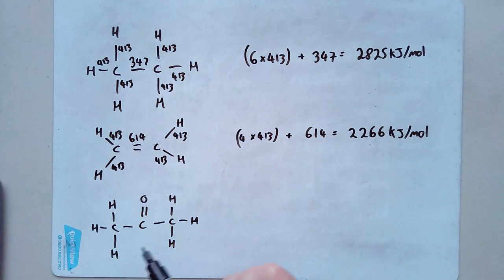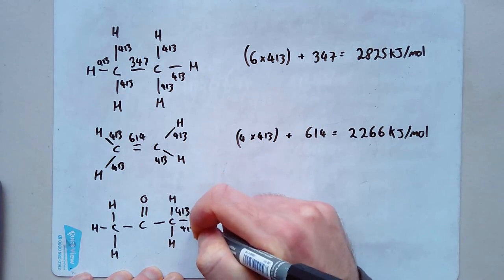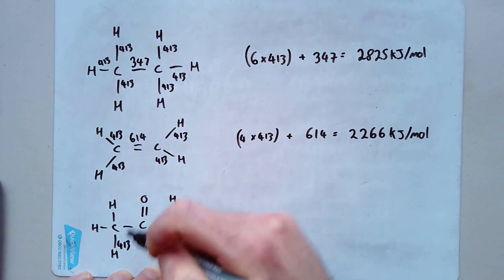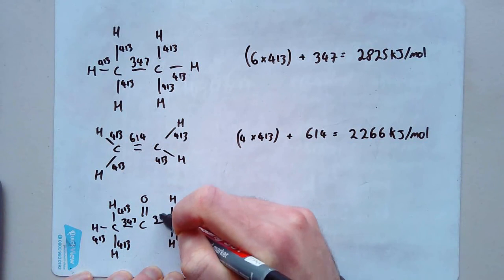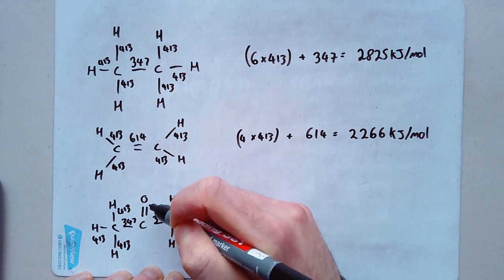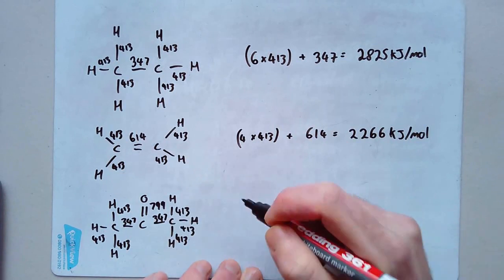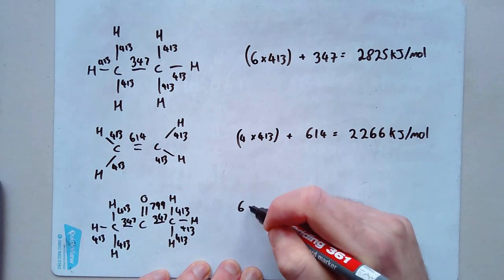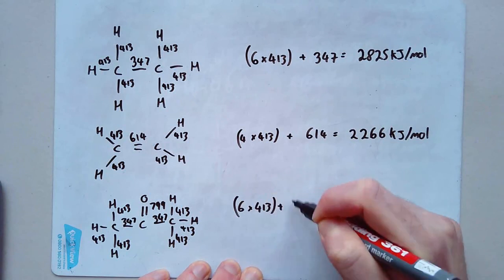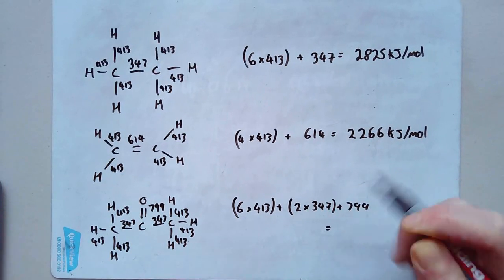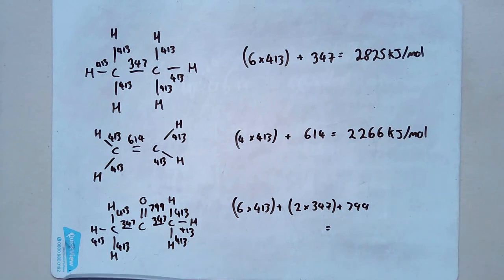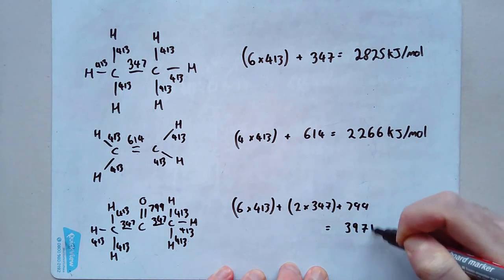The last one is a bit more complicated. I've got six carbon-hydrogen bonds each at 413, one carbon-carbon bond at 347, and one carbon-oxygen double bond at 799. I'm going to label every bond carefully: six lots of 413, plus two lots of 347, plus 799. Six times 413 plus two times 347 plus 799 gives me 3971 kilojoules per mole.